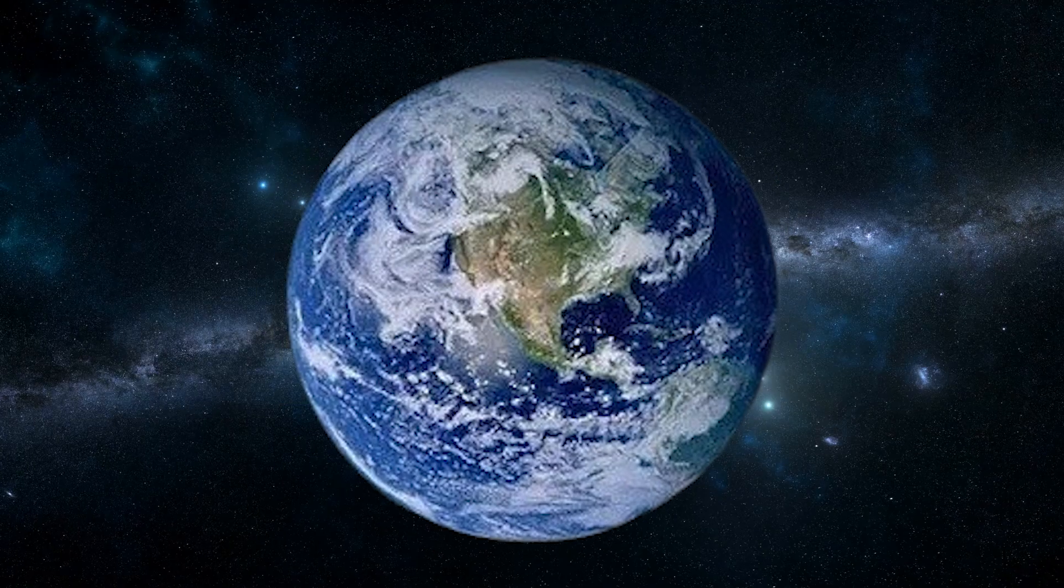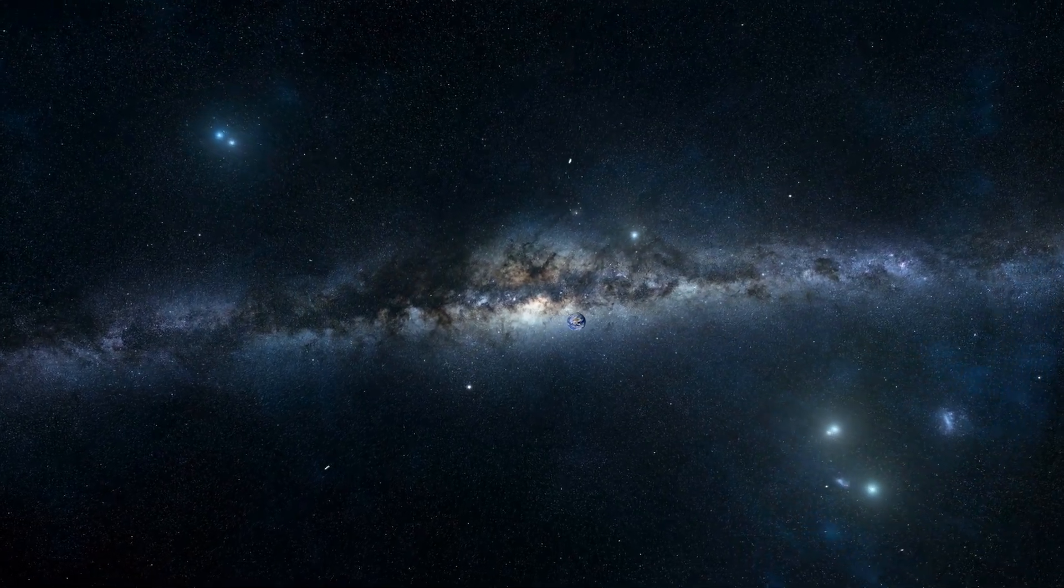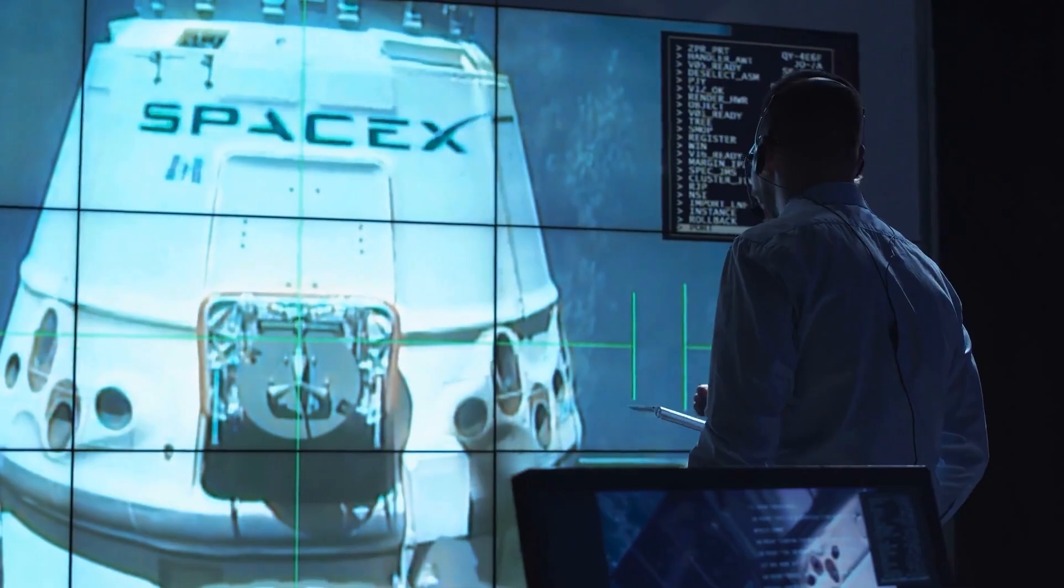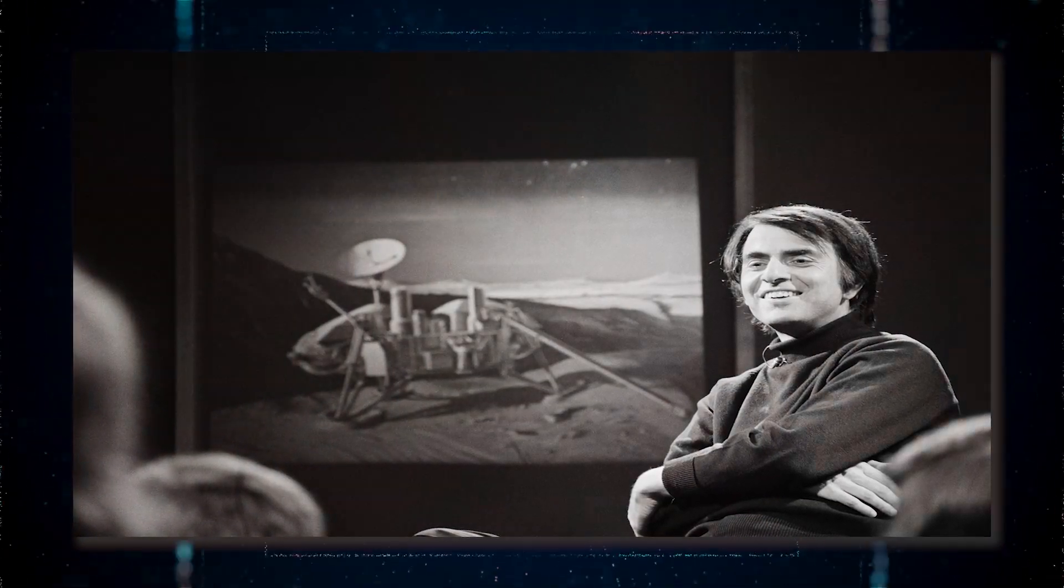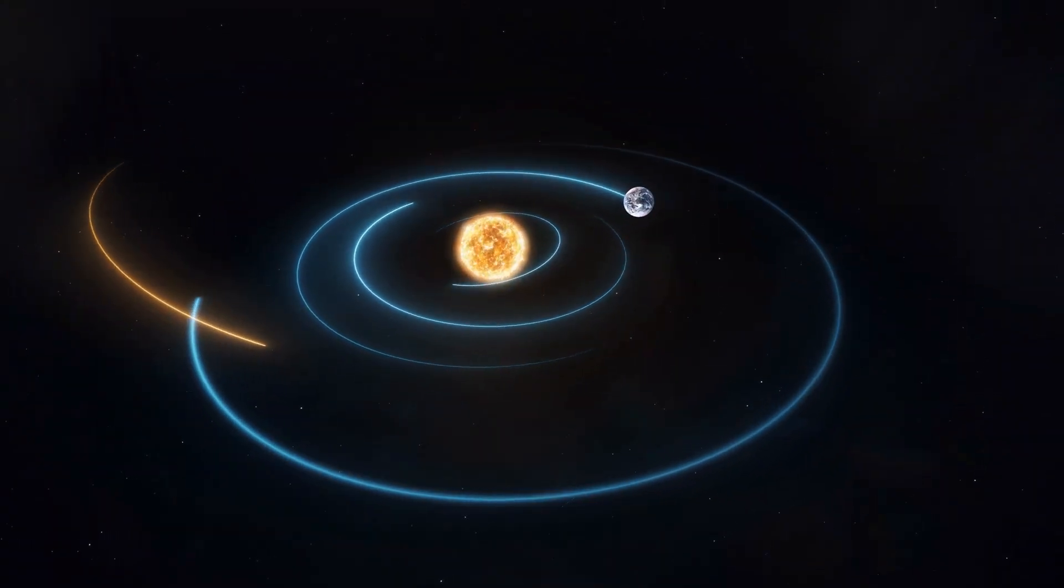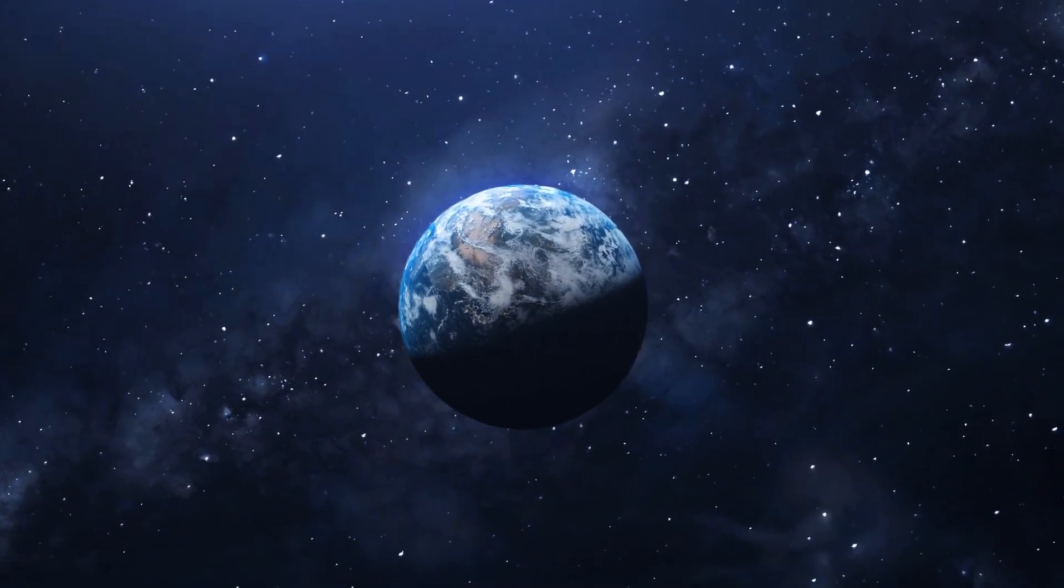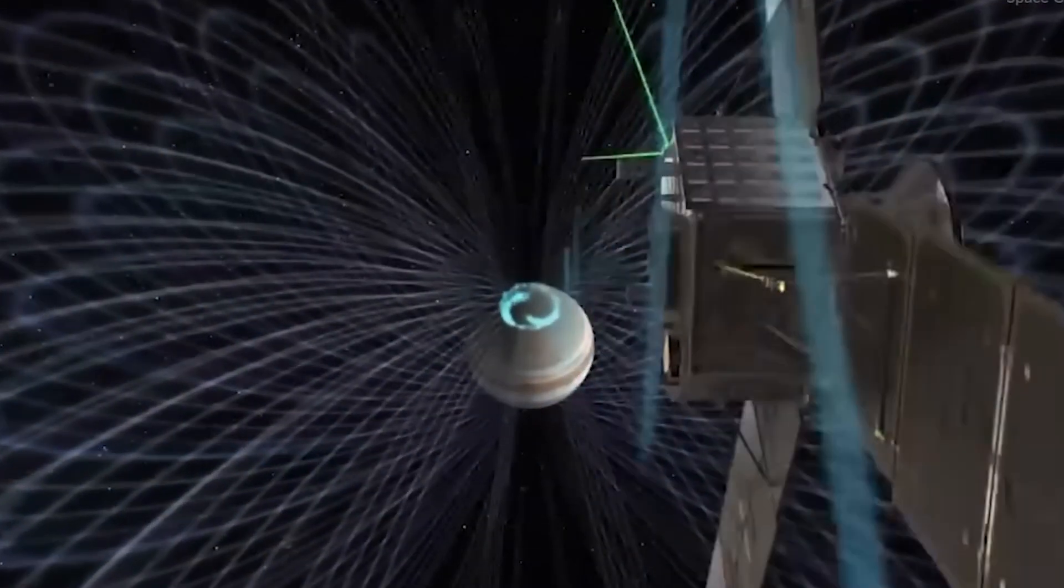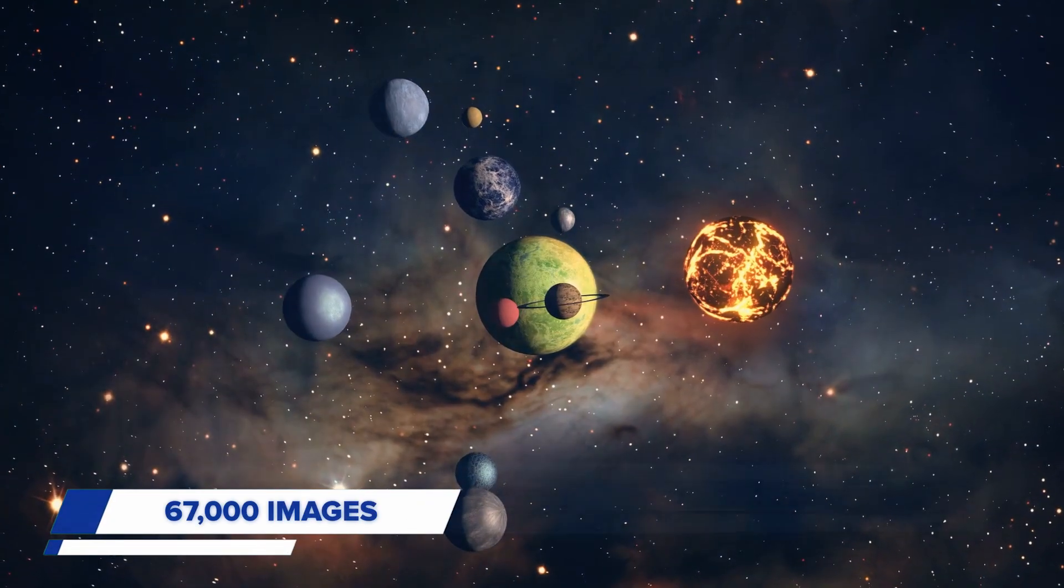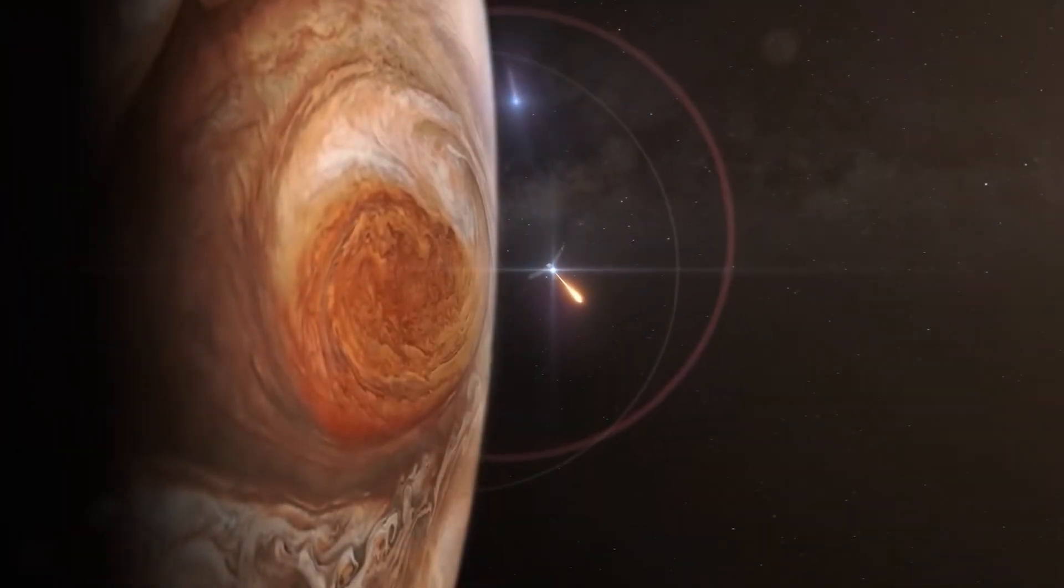Among these pictures was the famous pale blue dot image. This photo showed Earth as a tiny, almost invisible speck surrounded by the vastness of space. The picture and the thoughts it inspired were made famous by Carl Sagan, a well-known scientist and a member of the Voyager team. He pointed out how small and fragile our planet looks from far away, reminding us of the importance of taking care of our only home. These images from Voyager 1 were part of the last set of photos it sent back, adding to a total of 67,000 images taken by both Voyager spacecraft during their journeys through the solar system.